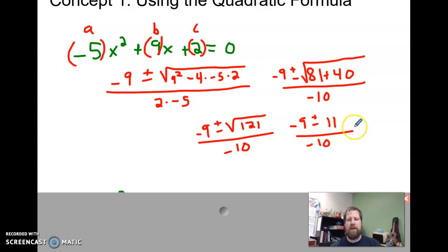Now we go into our two cases. So we've got, say this was a positive 11. Negative 9 plus 11 is going to give me 2 over negative 10, or negative 1 fifth. If this was a negative 11, I would have negative 20 over negative 10, or positive 2. And there are my two values, my two zeros.